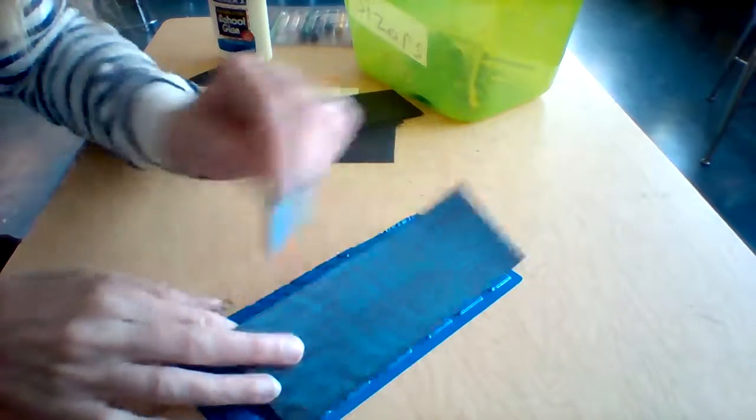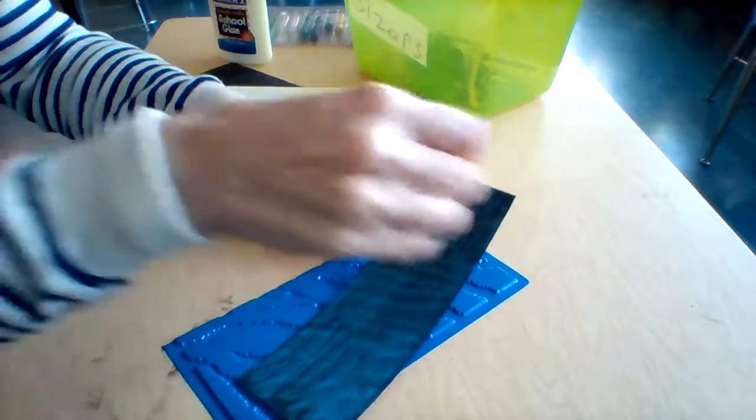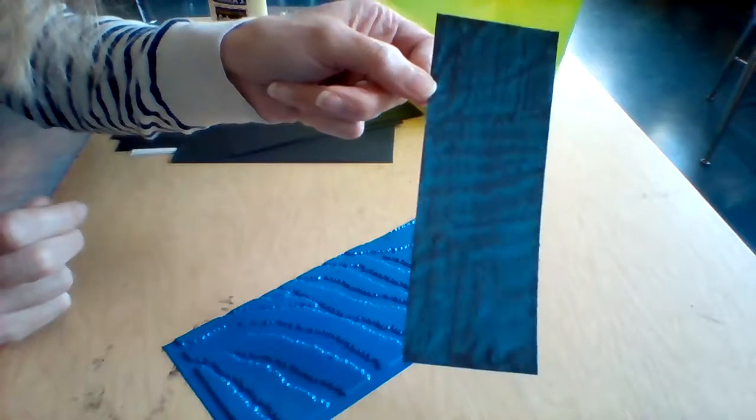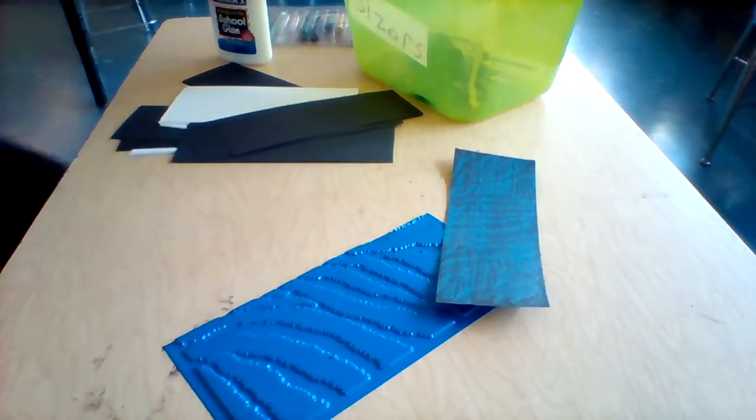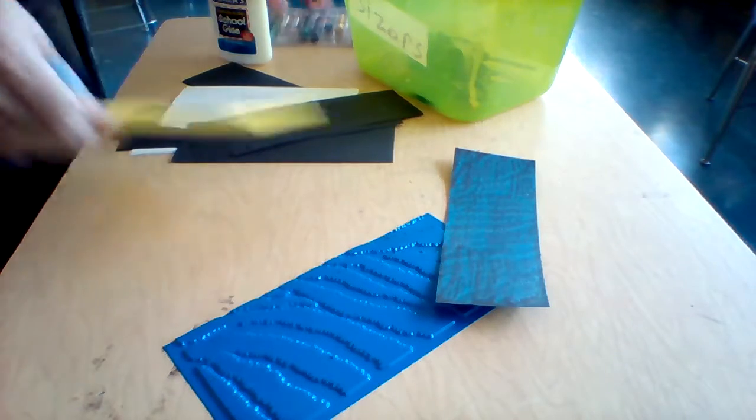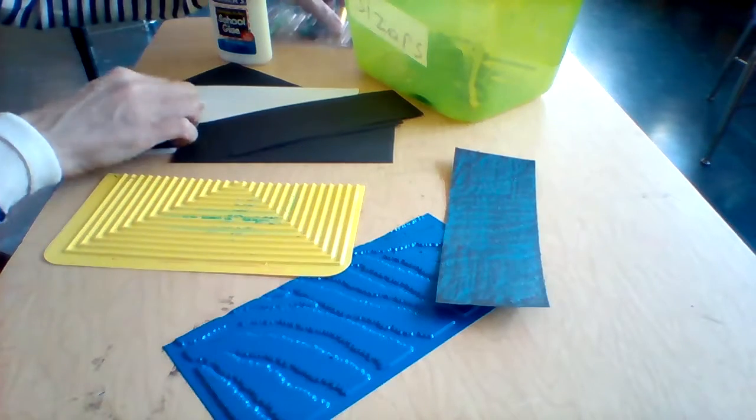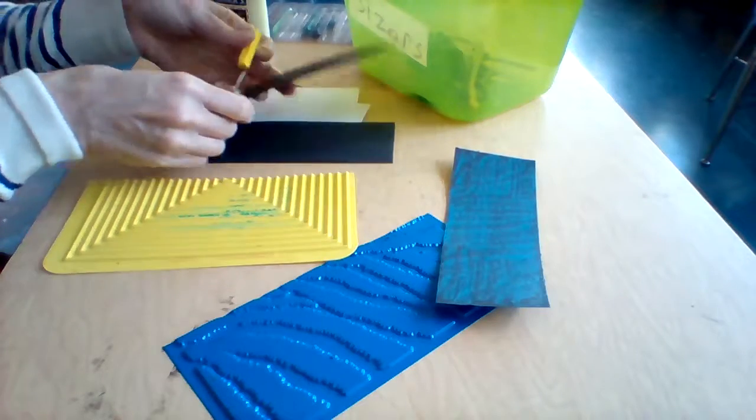When you're coloring, try not to go too fast. Don't take your paper and go scribble scrabble, or your textures won't come out even. You can use similar colors, or you could use different. It's up to you.